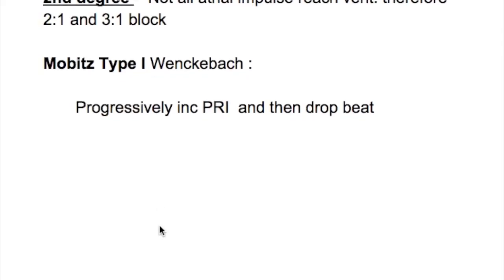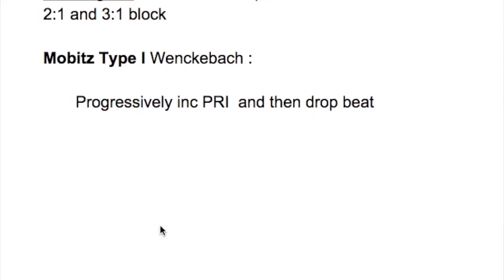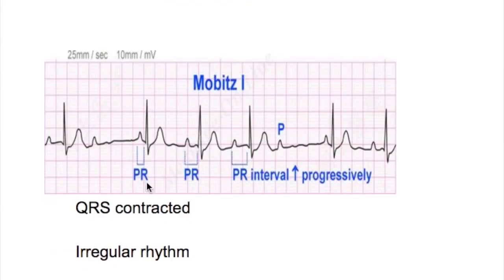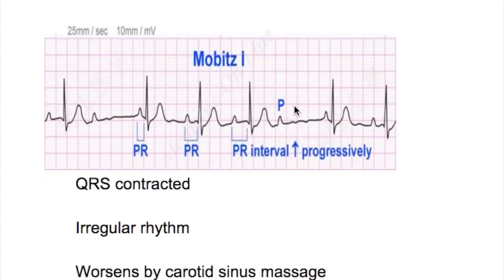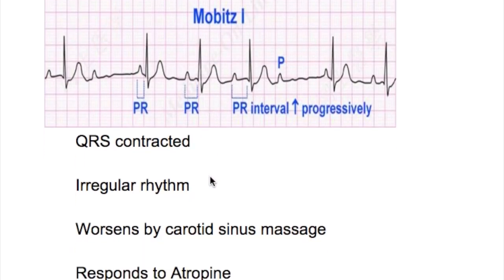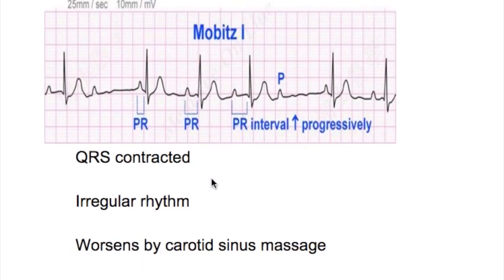In Mobitz type 1 there is a progressively increasing PR interval, and then there is a drop — one QRS is missing. Once the QRS is missing the rate is irregular, compared to the type 1 block where the rate was regular and QRS was present. Here the QRS is missing and the rate is irregular. This is worsened by carotid sinus massage but it responds to atropine.